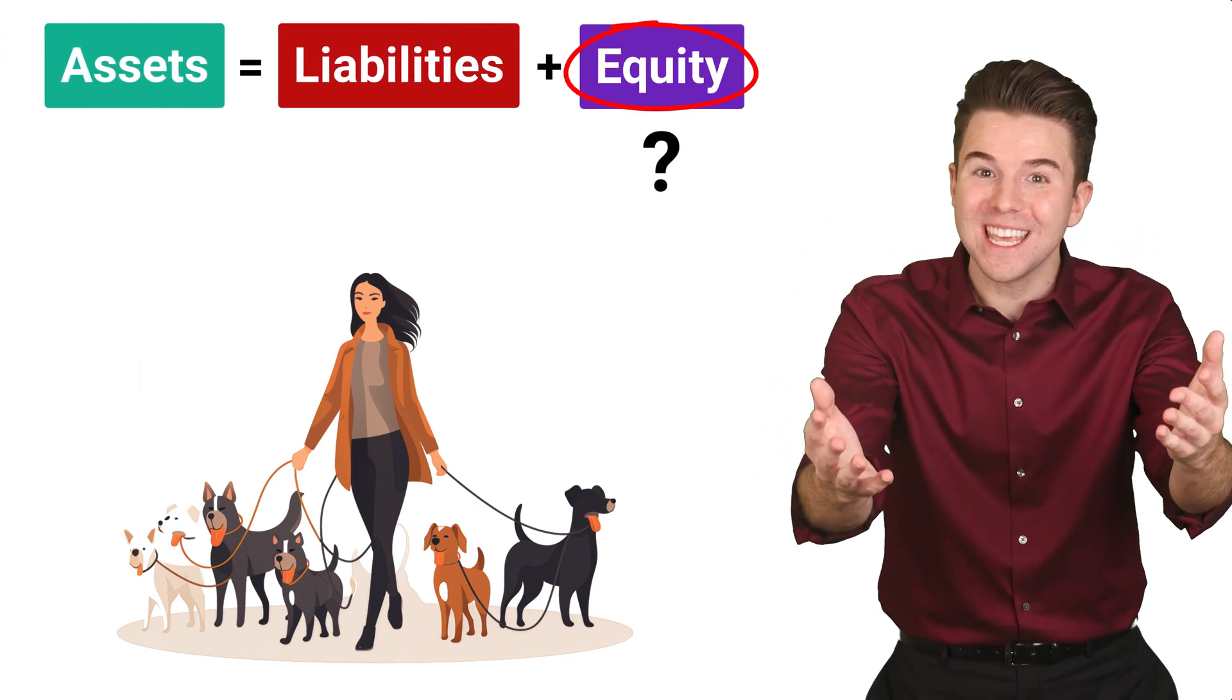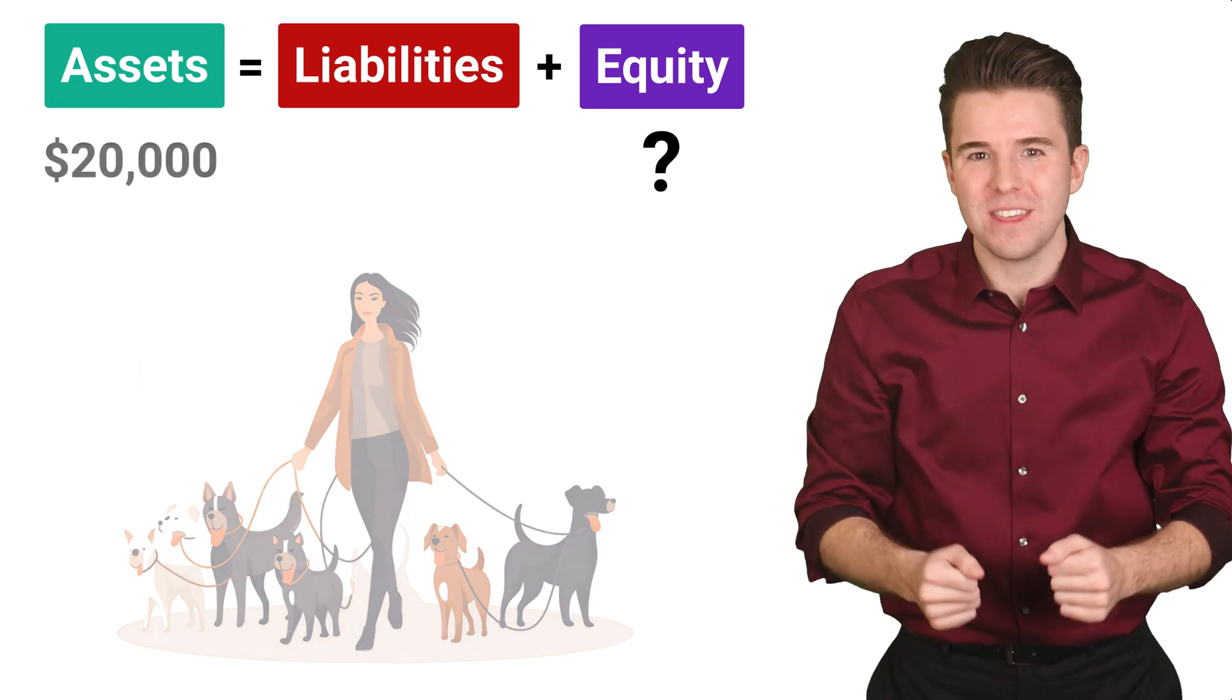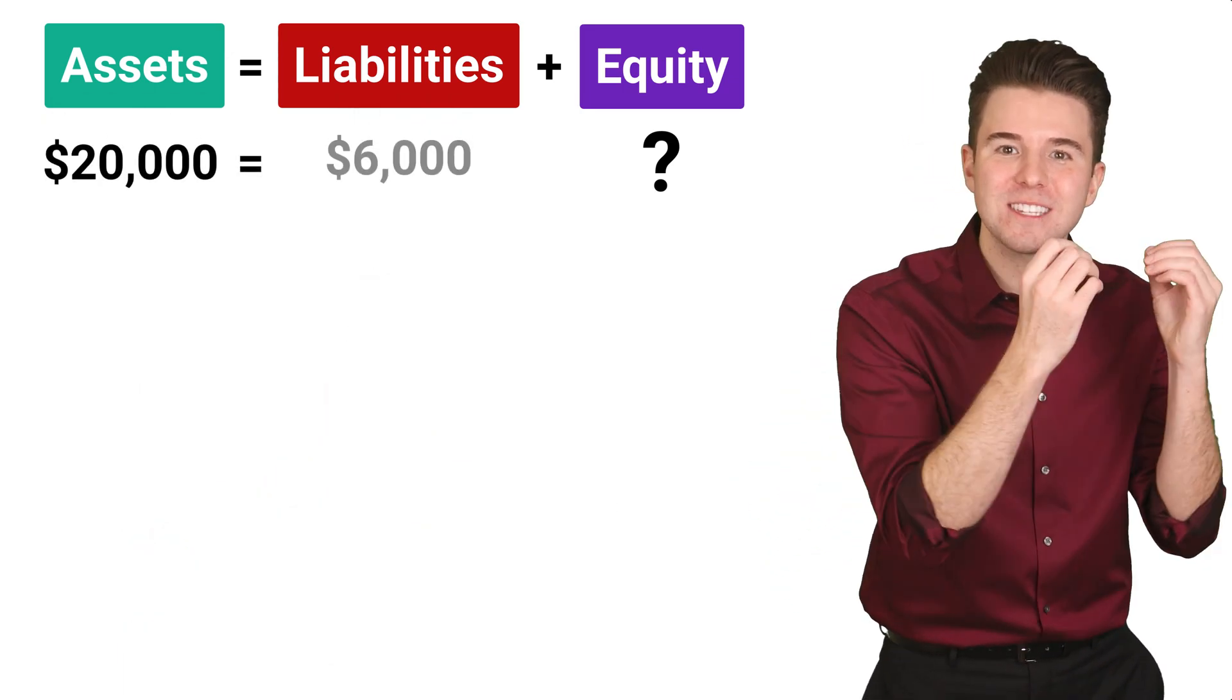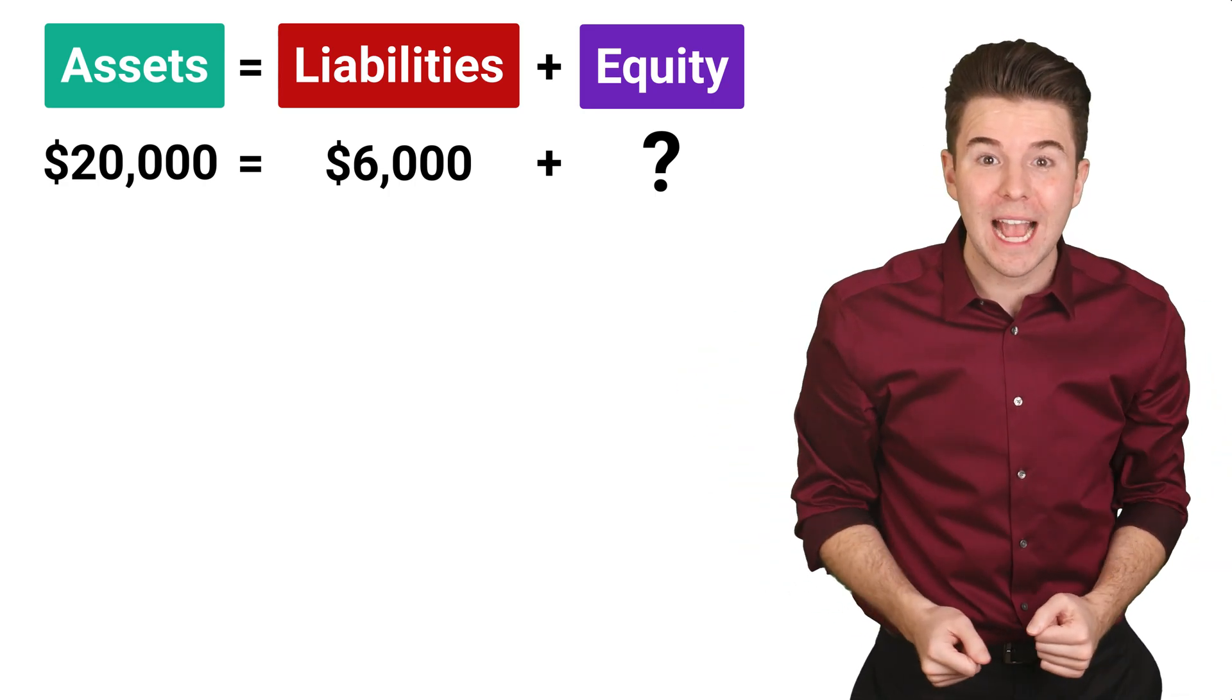Now that that's out of the way, we're ready for a couple examples. So imagine you have a dog walking business and you are trying to determine the equity in the business. And let's say assets are 20,000 and liabilities are 6,000. If we plug these numbers into our accounting equation,